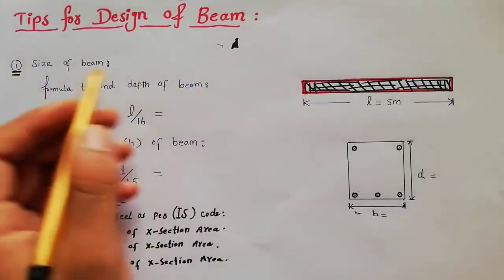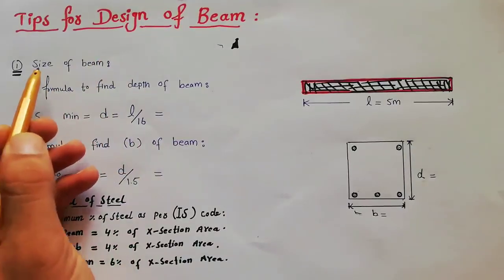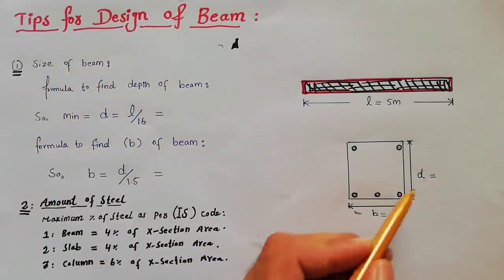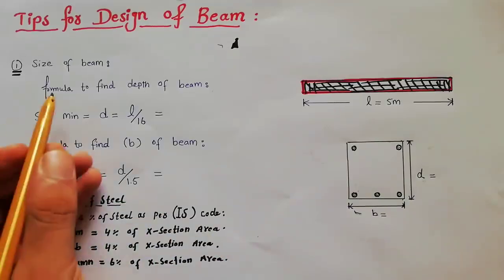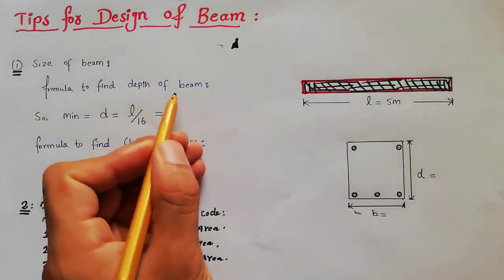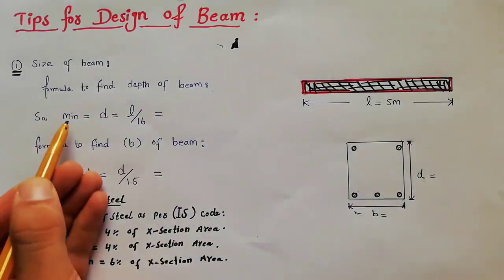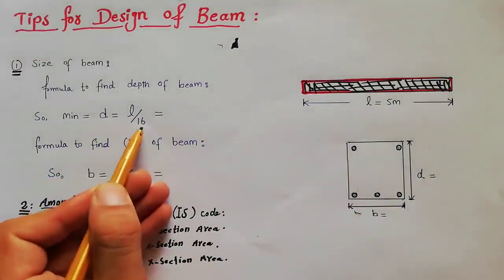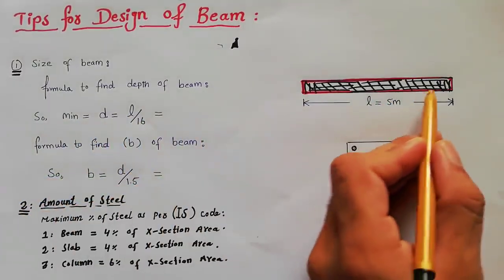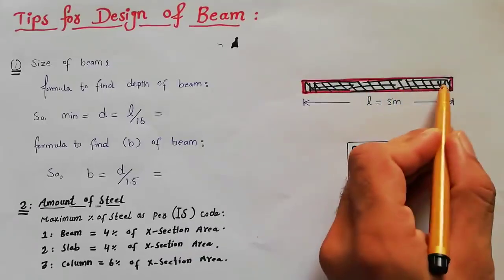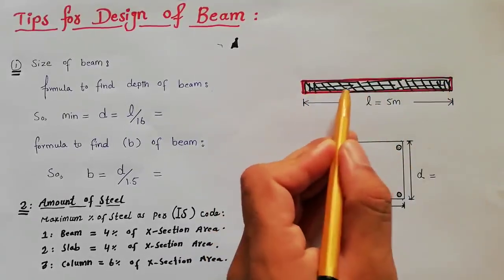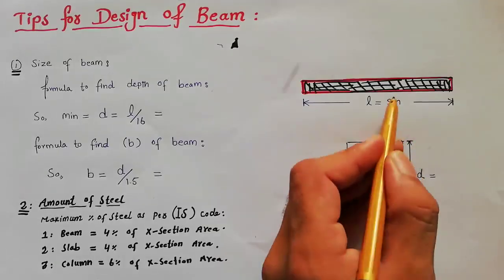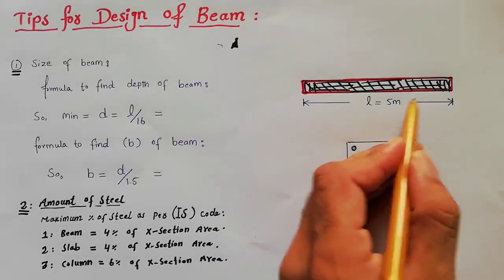In the first step, I will show you how to find the size of beam — depth and breadth. The formula to find minimum depth of beam is: depth d = L divided by 16, where L is the length of the beam. This beam has a length of 5 meters, so I will find the depth for a 5-meter RCC beam.